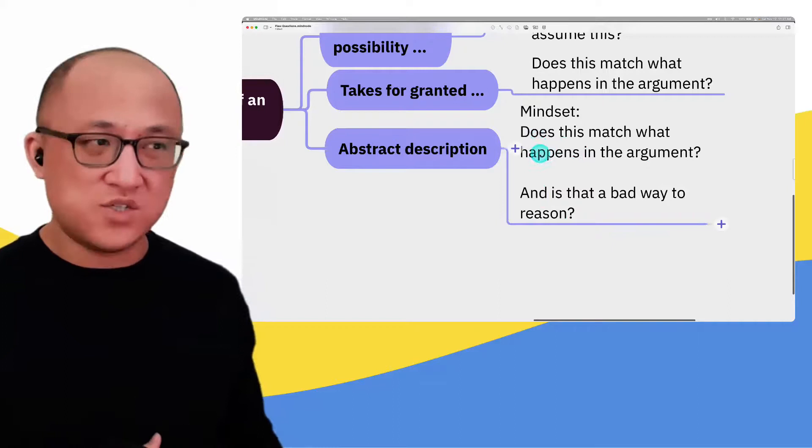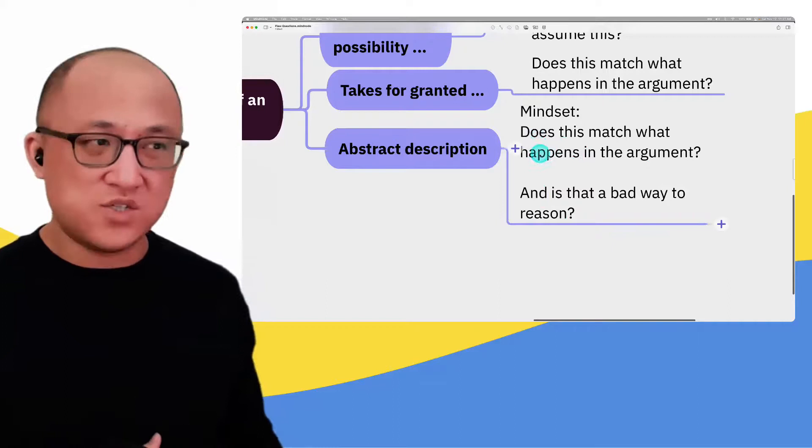But if the answer does match what happens in the argument, then you have to think: is that something wrong? Is that a flawed way of reasoning? So generally speaking, this is my approach when I see these different types of answer choices.